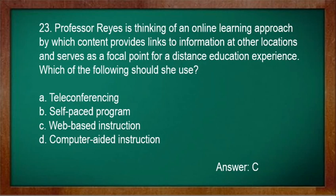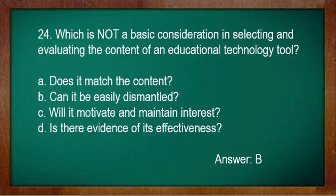Number 23: Professor Reyes is thinking of an online learning approach by which content provides links to information at other locations and serves as a focal point for a distance education experience. Which of the following should she use? A. Teleconferencing. B. Self-paced program. C. Web-based instruction. D. Computer-aided instruction. Answer: C.